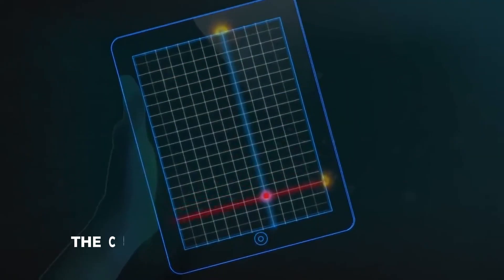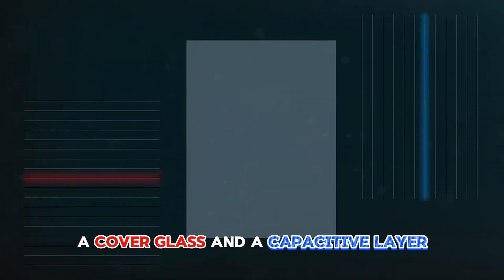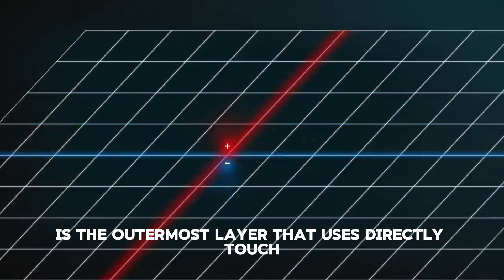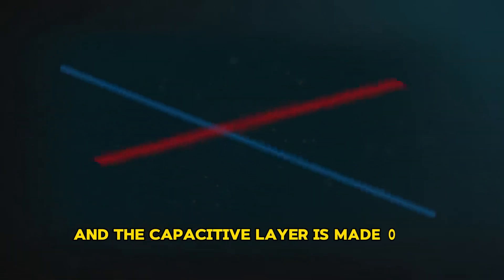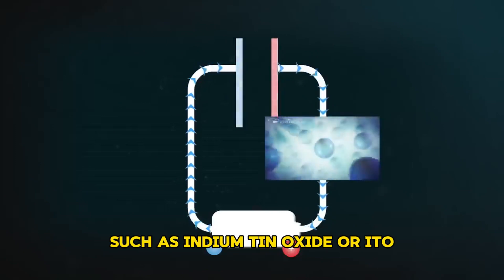Construction. Capacitive touchscreens typically consist of two main layers, a cover glass and a capacitive layer. The cover glass is the outermost layer that users directly touch, and the capacitive layer is made of a transparent conductive material, such as indium tin oxide (ITO).